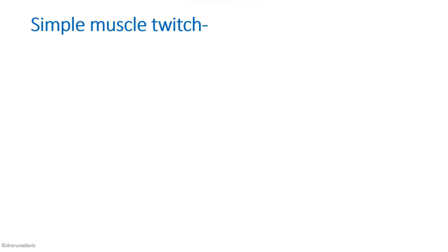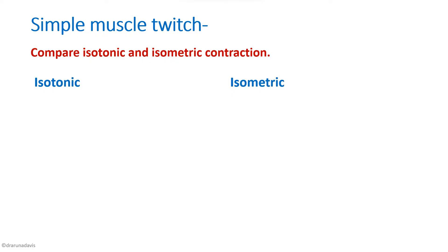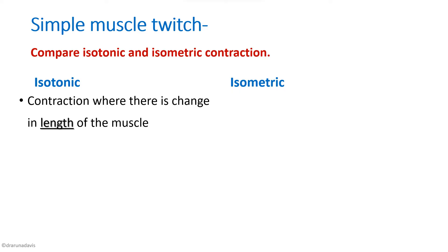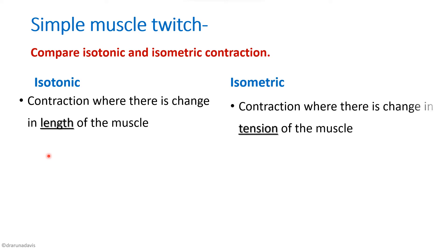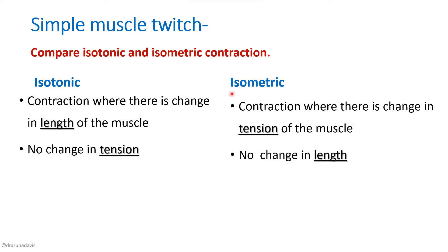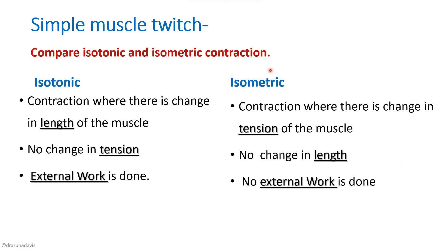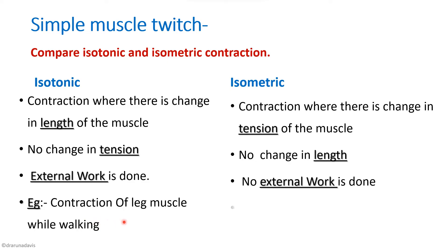A question that can be asked is to compare isotonic and isometric contraction. Isotonic contraction involves a change in length of the muscle with no change in tension — 'iso' means same, 'tonic' means tension. Isometric contraction involves a change in tension with no change in length — 'metric' indicates length. External work is done in isotonic contraction but not in isometric. An example of isotonic is contraction of leg muscles while walking; an example of isometric is maintenance of posture against gravity.